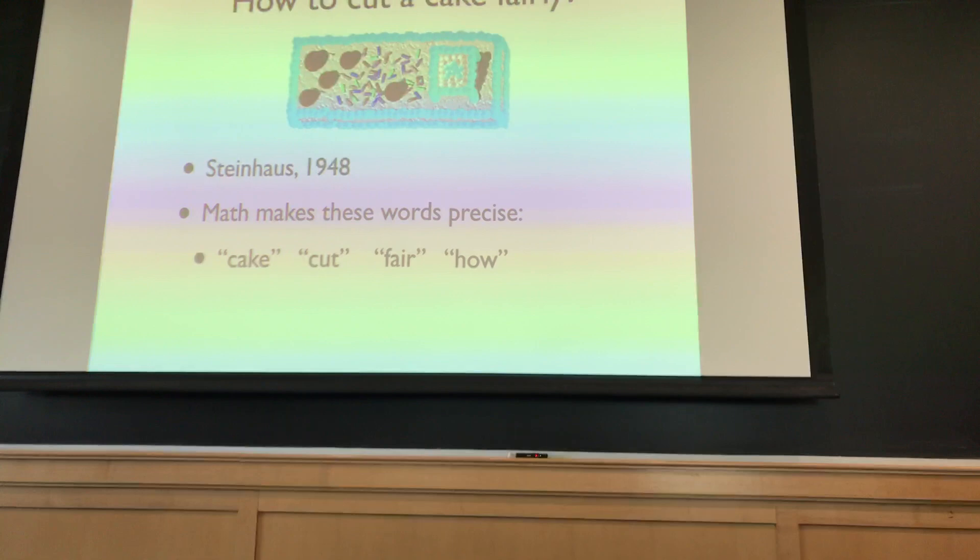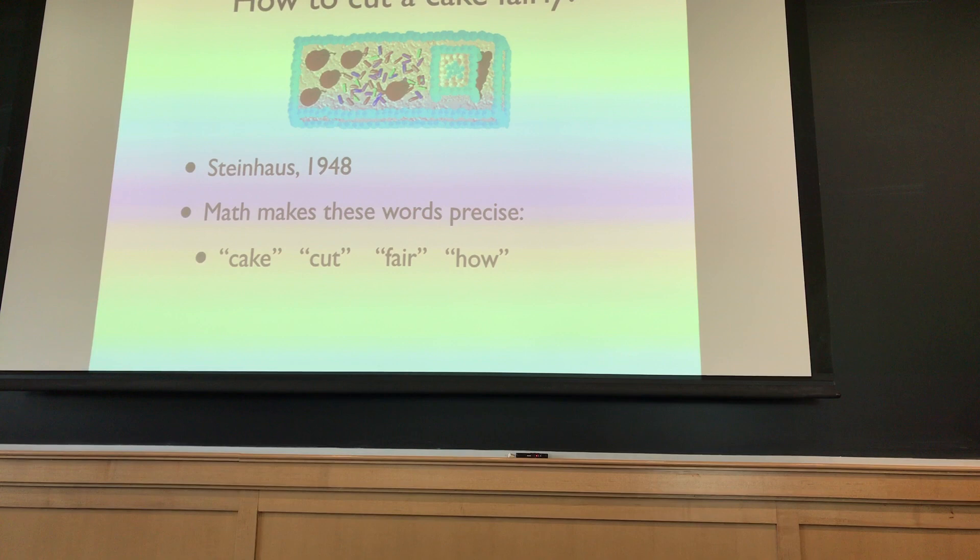Do you know a way to divide a cake fairly? This is a well-known procedure: one cuts, the other chooses. Why is that fair? The person cutting the cake will want to make sure they get as big a piece as possible, and in order to guarantee that, they'll have to cut as close to evenly as they can.